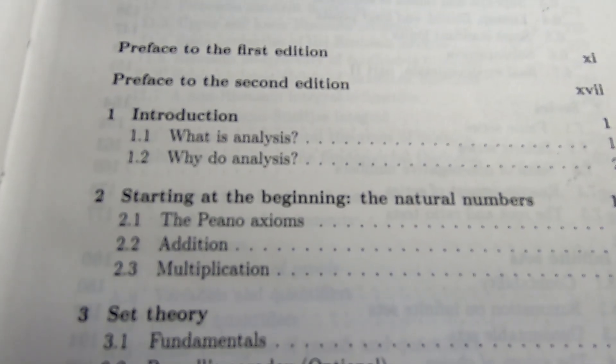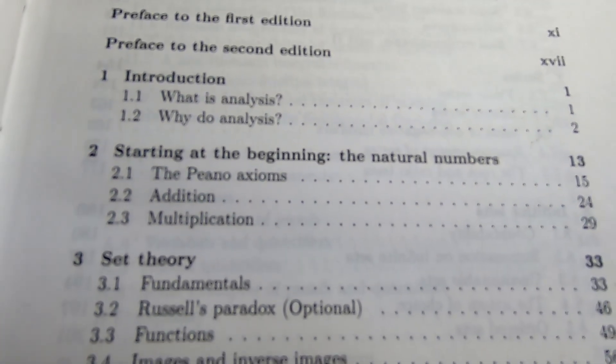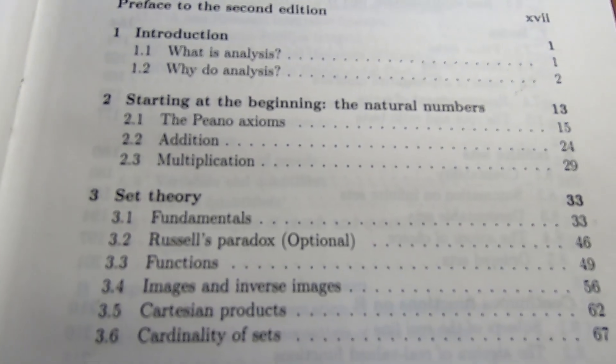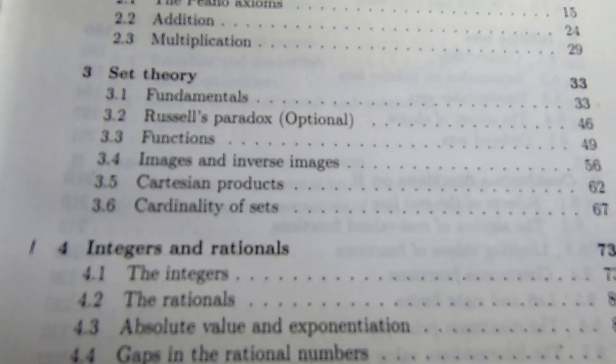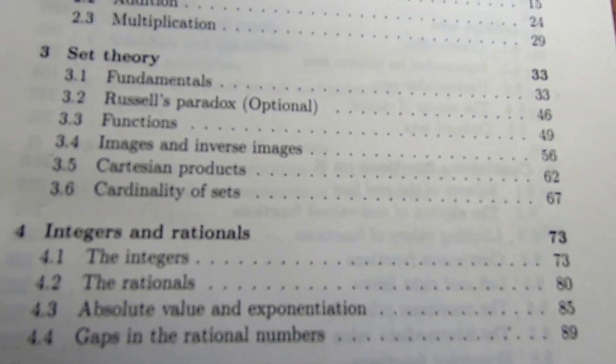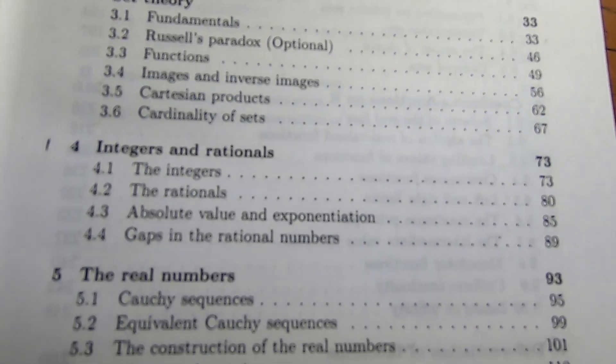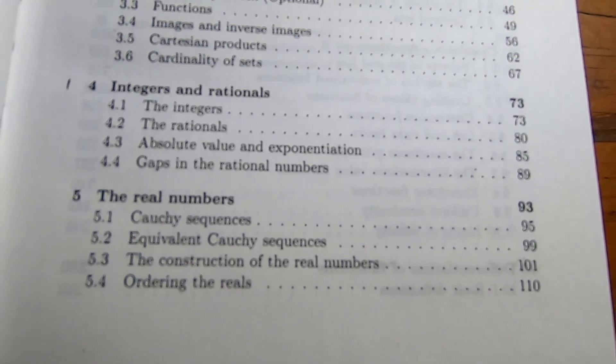So this is the table of contents. He starts off by talking about what is analysis, and then why do analysis. Goes on to talk about some important things regarding the natural numbers, some set theory. He even discusses Russell's paradox briefly. Cardinality of sets, integers, and then the real numbers.